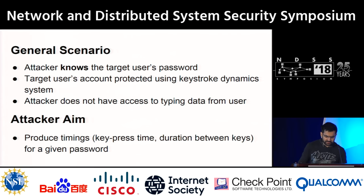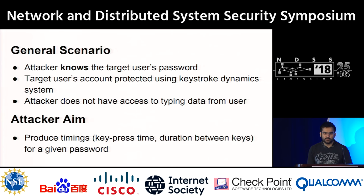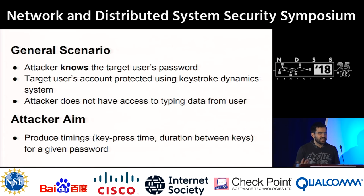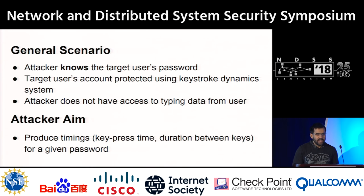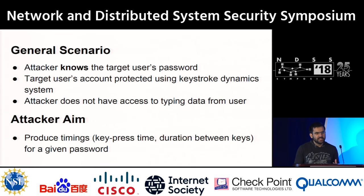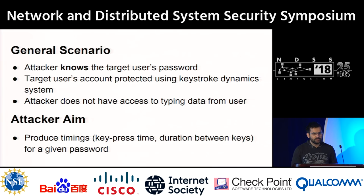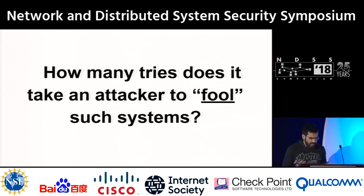The general scenario for the rest of this talk is that the attacker already knows the password of the target user — through a leaked database or any other source — but cannot access the timing samples of the user. If the target user's account is protected using keystroke dynamics, the attacker just typing the password would likely not succeed. The aim is to produce a vector of hold durations and inter-keystroke timings that passes the classifier in the fewest number of tries.